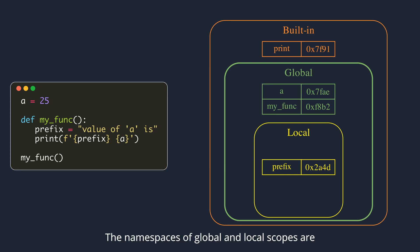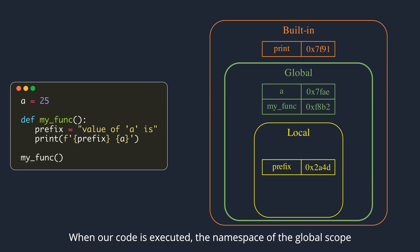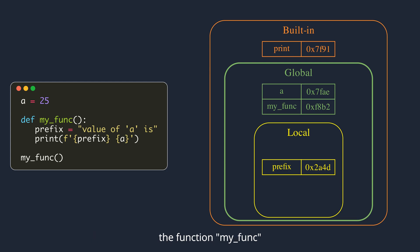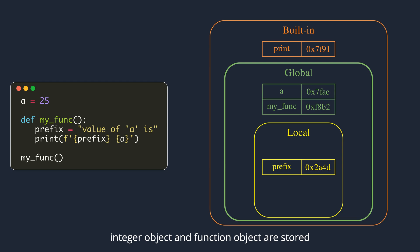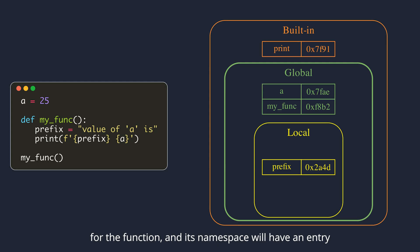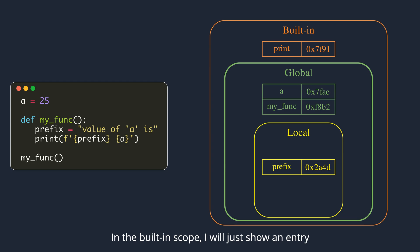Namespaces of global and local scopes are implemented using dictionaries. When our code is executed, the namespace of the global scope will have two entries — one for variable a and another for the function my_func. Values correspond to the memory address at which the integer object and function object are stored. When my_func is called, a new scope is created for the function, and its namespace will have an entry for the string variable prefix. In the built-in scope, there will be an entry for the print function, among many others.